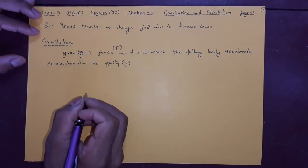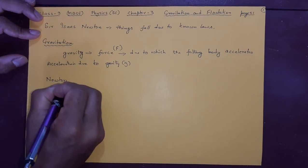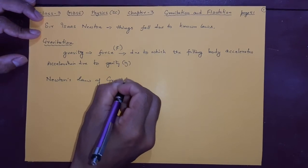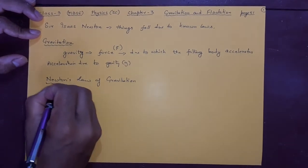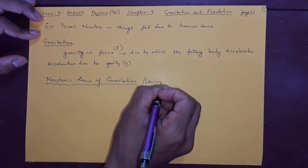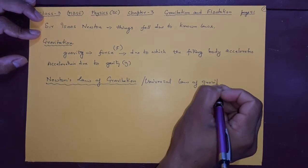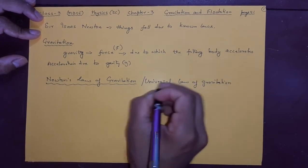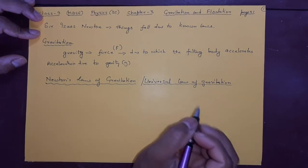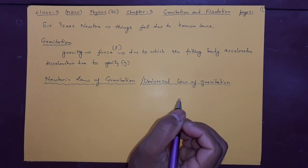He gave this law, which is called Newton's Law of Gravitation, also called the Universal Law of Gravitation — both names refer to the same thing. It is called universal because it is applicable everywhere, not just on earth but outside the earth as well.